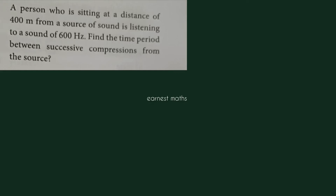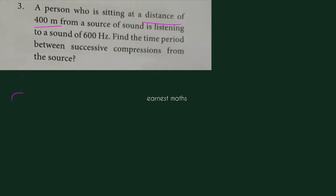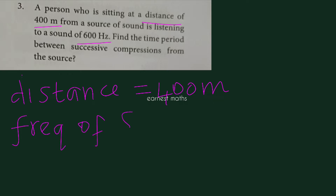Question number 3. A person who is sitting at a distance of 400 meters from a source of sound is listening to a sound of 600 hertz. Unit hertz is the form of frequency. Frequency of sound, represented by n, is equal to 600 hertz.